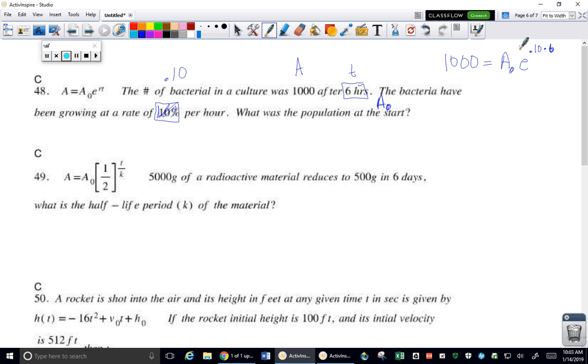Now remember, this is just a decimal. So I'm going to divide both sides by E to the .60. And I multiply six times .1, I get .60.